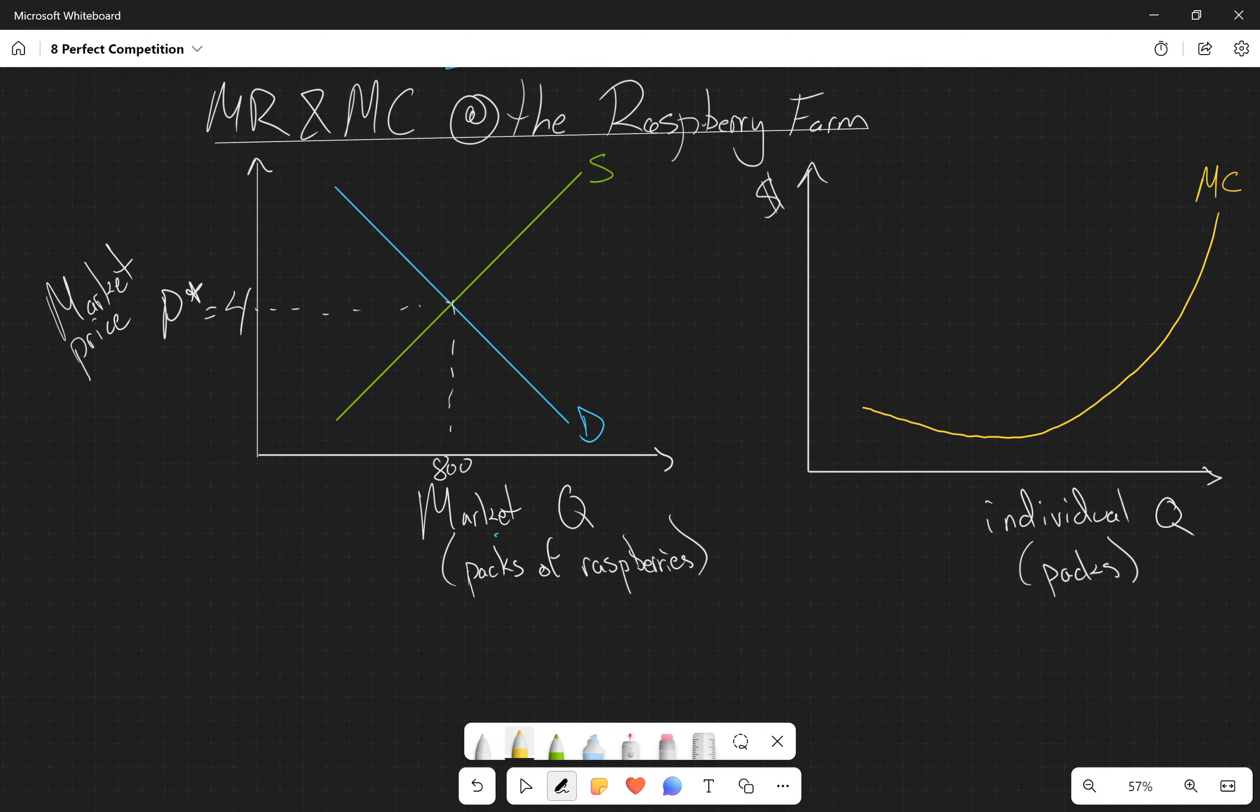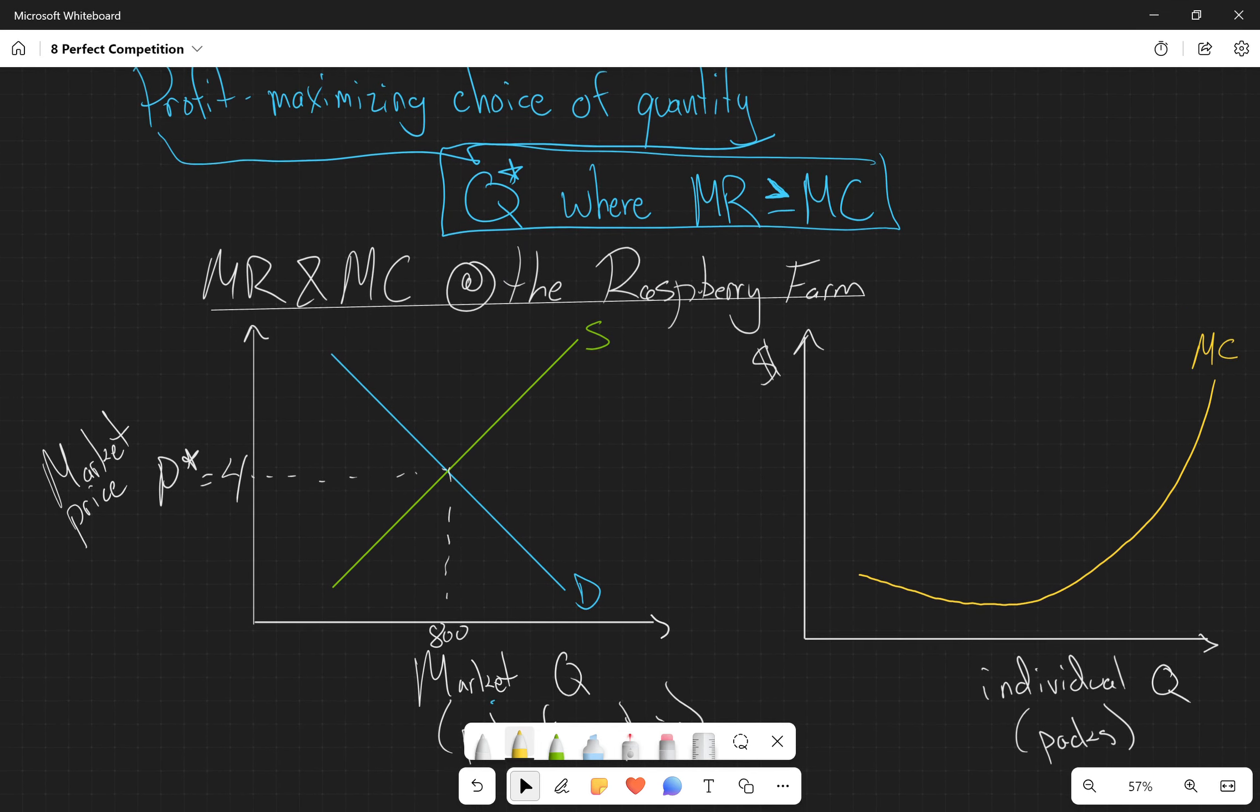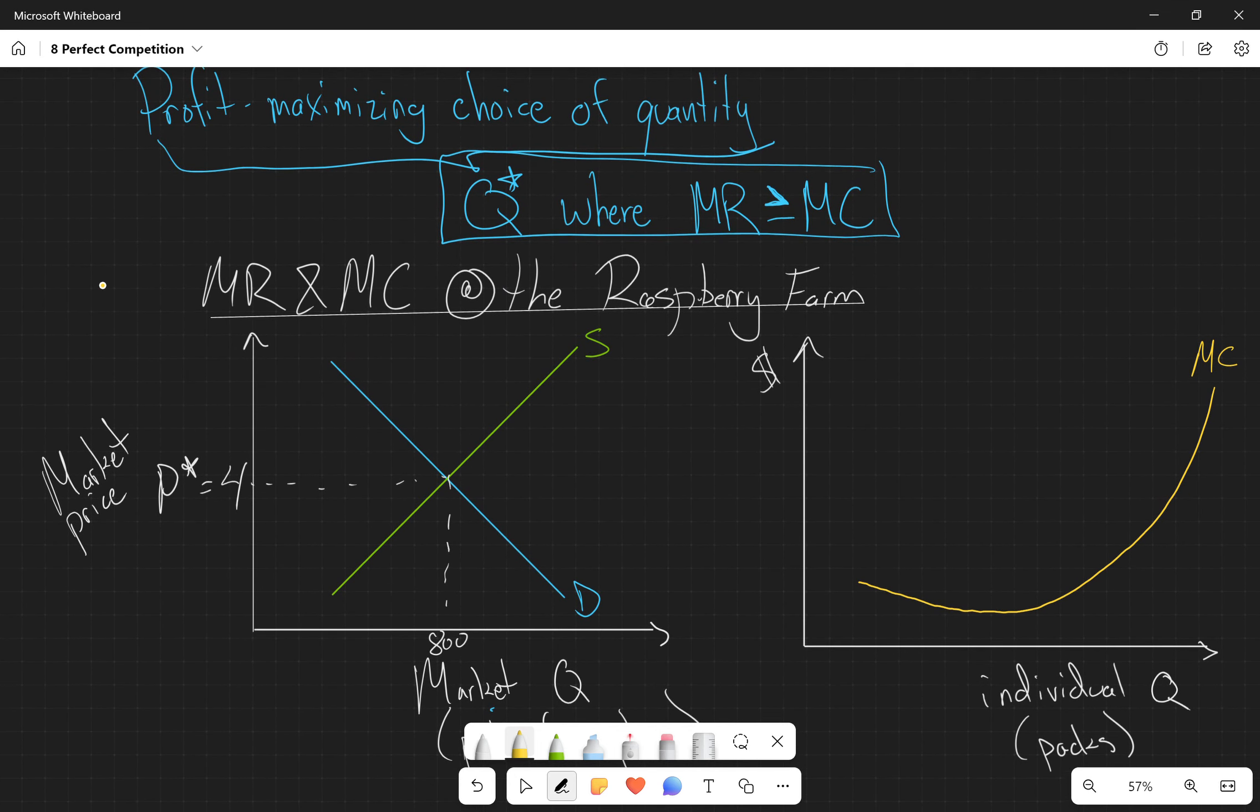We've got half of the equation here. We know that the profit maximizing choice of quantity is where the marginal revenue is greater than or equal to marginal cost. We've got the marginal cost, now we need to figure out the marginal revenue. Here's where it gets a little tricky.